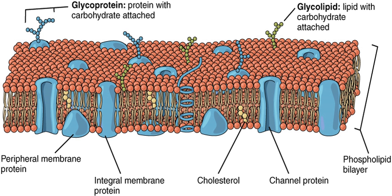The lipid bilayer consists of two layers: an outer leaflet and an inner leaflet. The components of bilayers are distributed unequally between the two surfaces to create asymmetry between the outer and inner surfaces. This asymmetric organization is important for cell functions such as cell signaling. The asymmetry of the biological membrane reflects the different functions of the two leaflets. Certain proteins and lipids rest only on one surface of the membrane and not the other.